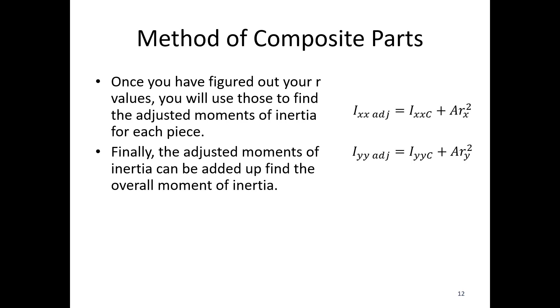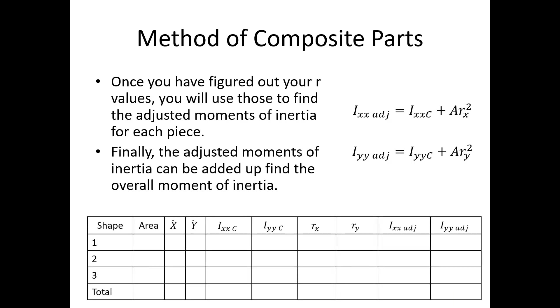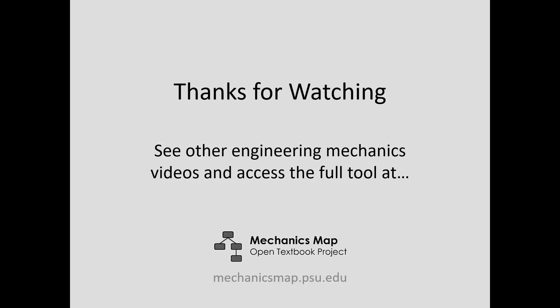Once the R values are determined, the adjusted moments of inertia can be added up. We simply add Ixx for the first piece, Ixx for the second piece, and Ixx for the third piece — those adjusted values — and that sum gives the overall moment of inertia. Going back to our table, we add up the adjusted values for parts 1, 2, and 3 to get the total Ixx, and do the same for Iyy. That's all for today's video lecture. Thank you for watching, and I hope to see you again.